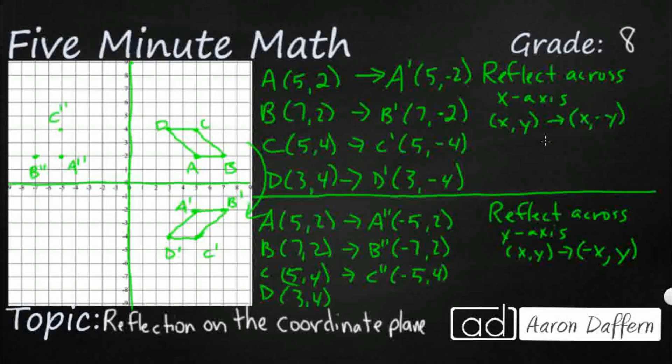And D is going to be 3,4. It goes to D double prime, negative 3, 4. And so there we go. D double prime. And that's how you reflect.